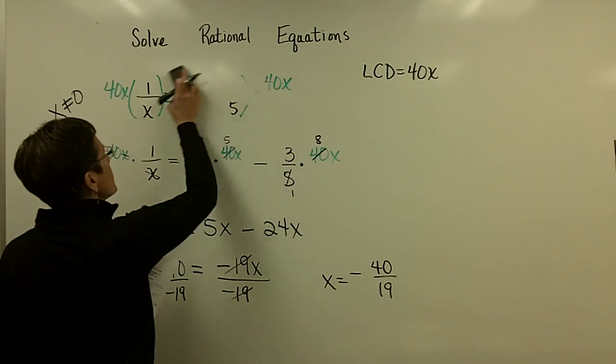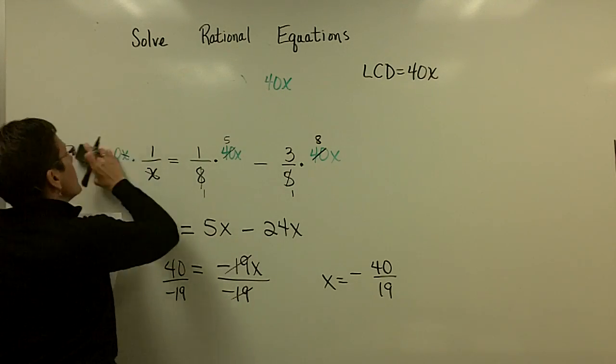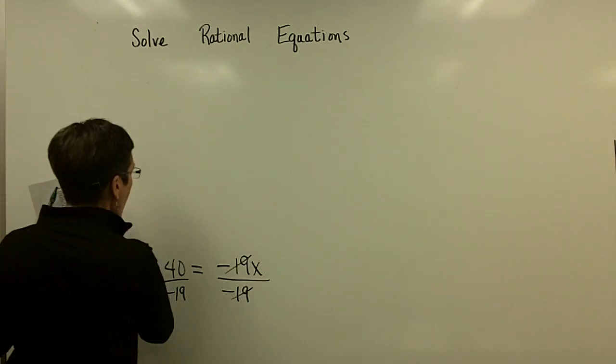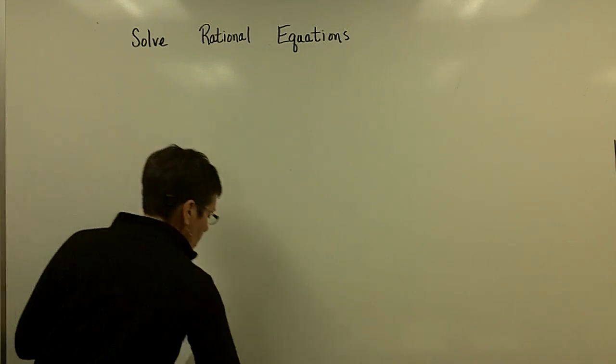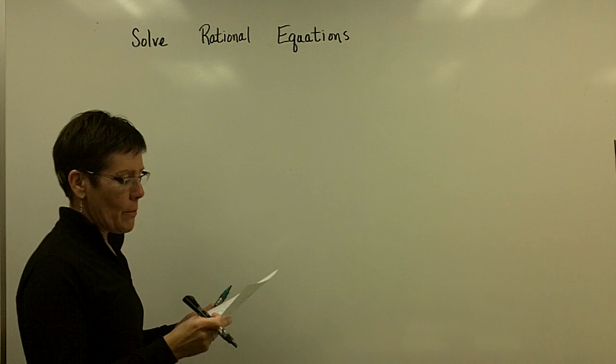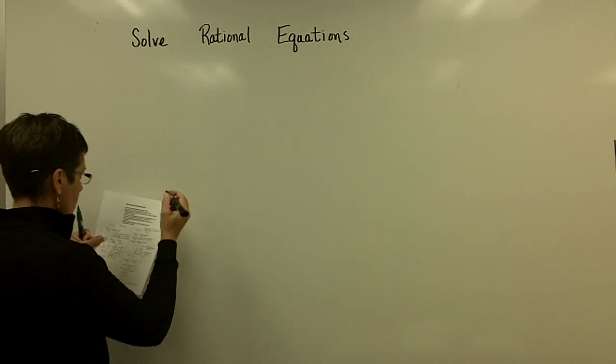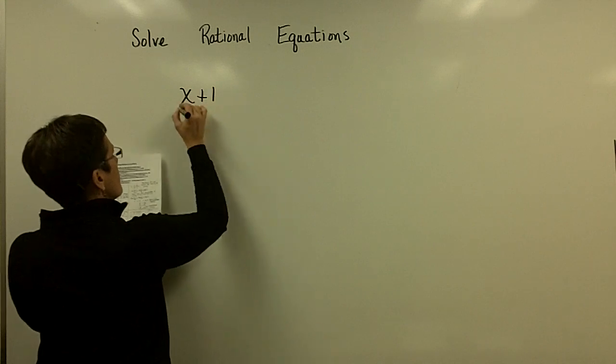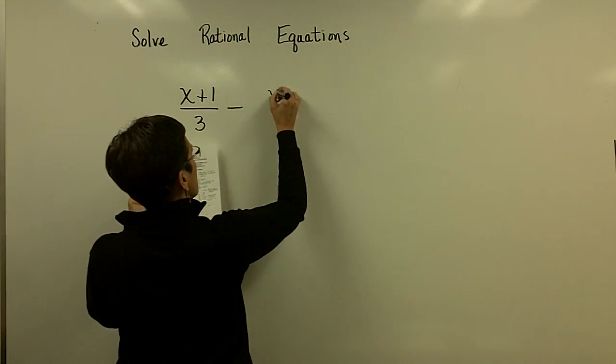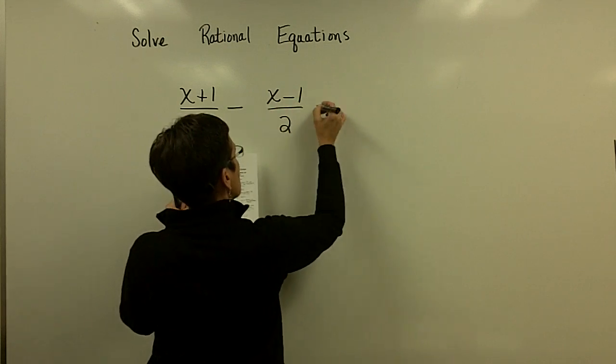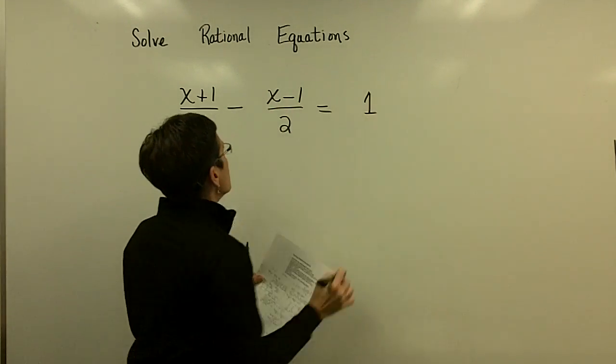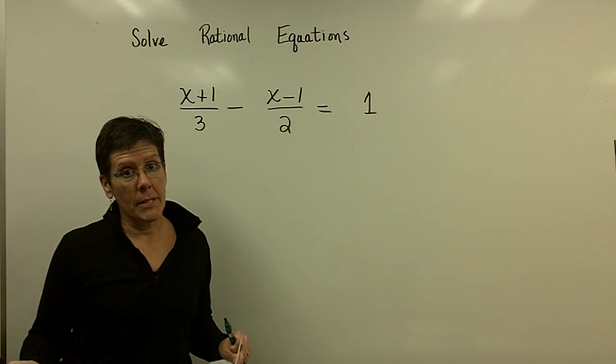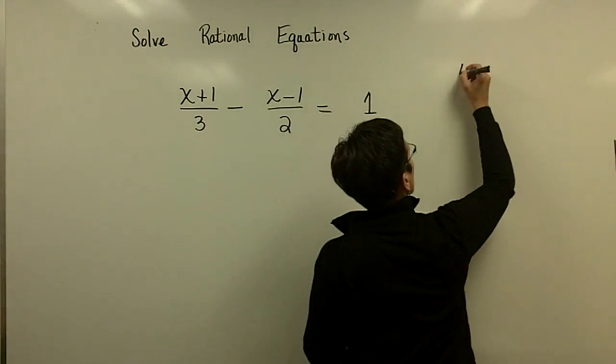Let's do another one though. That's what I would really like to do is get through about three problems before we finish this clip. So again, solve for x, get rid of the denominators. Can the denominators be factored? No. What is the least common denominator? 6. So let's just write it over here.